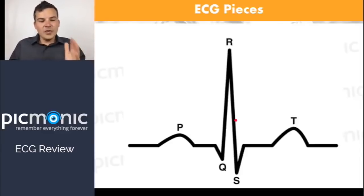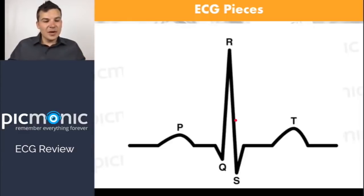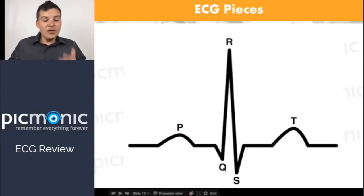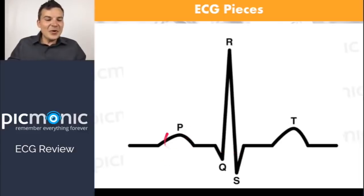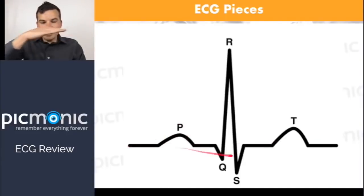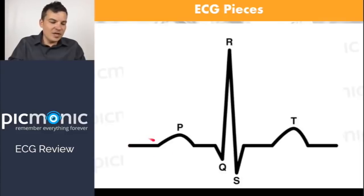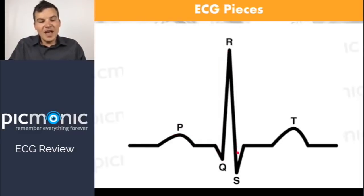When we talk about the ECG, you've got to know the parts. If you can remember the alphabet, you can remember P Q R S T — just remember that P starts first. The P wave is the first deflection above the isometric line, which is essentially the baseline. Then we've got the QRS complex, and then the T wave — the deflection after the QRS complex.